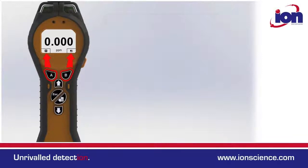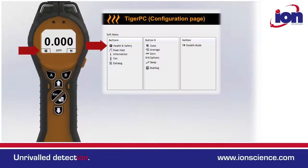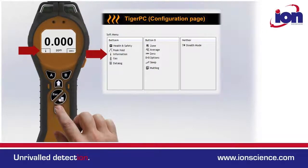Functions can be dragged and dropped into a specific order within the Tiger PC software package. However you arrange them in Tiger PC is how they appear on your instrument. Placing functions in a specific order can significantly improve productivity, specifically in repetitive applications.